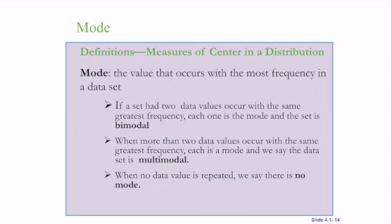Mode requires no calculation. Mode is the value that occurs most frequently in a data set. If a data set has two values that occur with the same frequency, it can be bimodal. If it has three or more, we call it multimodal. It can also be true that there's no mode, no data value that repeats.